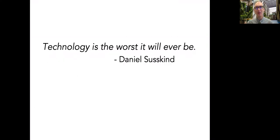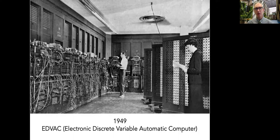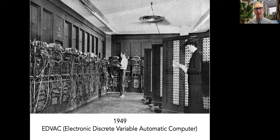There's a quote from Daniel Susskind, the author: "Technology is the worst it will ever be." Think about that — you will never get another cell phone that is worse than the one you currently have. Going back into the history of computers: 1949 was the very first computer. In the grand scheme of things it was not very long ago, about 70 years ago. The electronic discrete variable automatic computer was as big as a room and had very limited capabilities — it could do some simple additions and calculations.